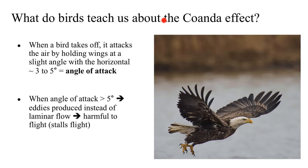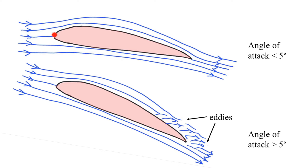Let us see what birds teach us about the Coanda effect. When a bird takes off before getting into flight, it attacks the air by holding its wings at a slight angle with the horizontal of around 3 to 5 degrees, known as the angle of attack. When the angle of attack is more than 5 degrees, eddies are produced around its wings instead of laminar flow, indicating turbulence, which leads to stalling of flight. The wing structure of a bird is called the aerofoil structure — convex on top and concave below — designed by nature to give the most favourable ratio of lift to drag to facilitate the bird in flight.